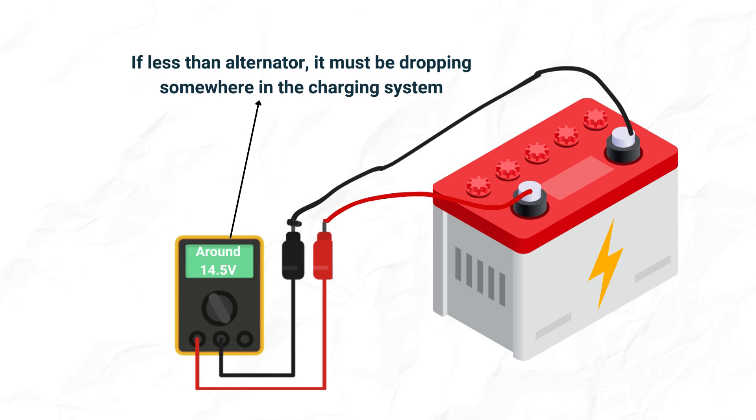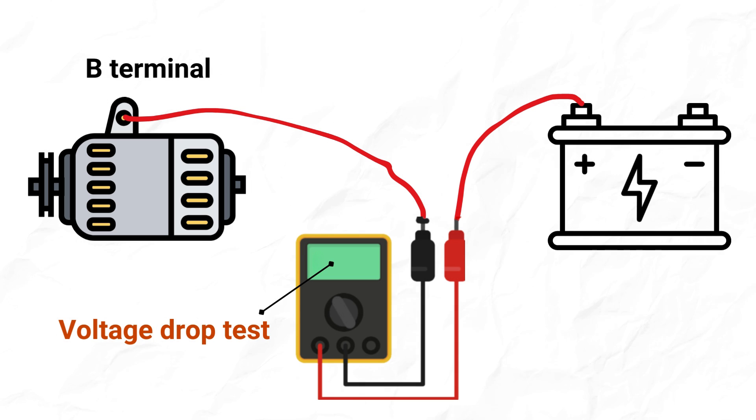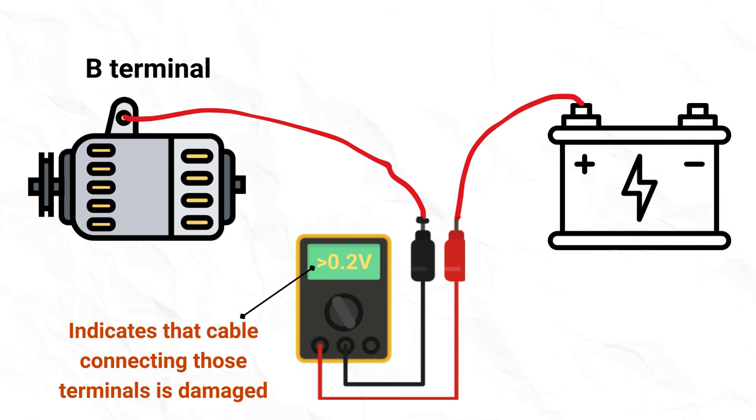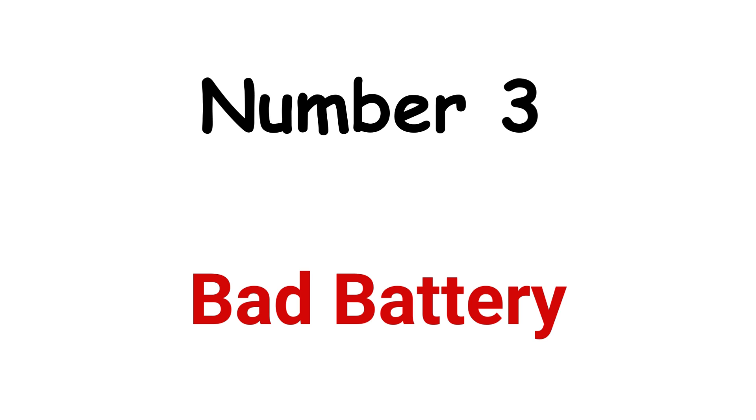Also, measure voltage at the positive terminal of the battery. If it is less than the alternator's voltage, it means that it is being lost somewhere at the connection of the alternator. Next, conduct a voltage drop test across battery positive terminal and B terminal of alternator. If voltage drop is more than 0.2 volts, it could indicate that the cable connecting those terminals is broken.